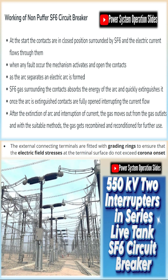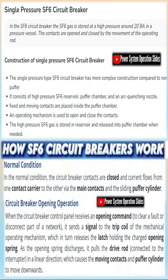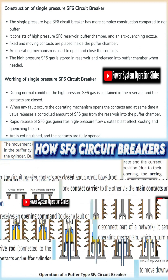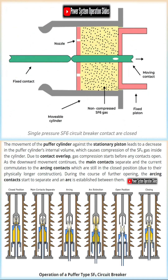The working principle of an SF6 circuit breaker involves the use of pressurized gas to extinguish the arc. Under normal conditions, the breaker remains closed and the SF6 gas serves as an insulating medium. During a circuit breaker opening operation, when a fault is detected, the operating mechanism separates the contacts, and an arc is formed and immediately quenched by a blast of SF6 gas directed through a nozzle.